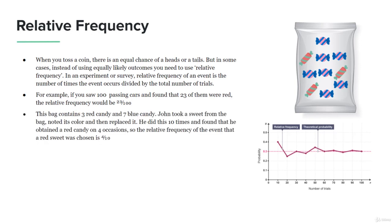This bag of candy contains 3 red candies and 7 blue candies. You can see that from the bag on the right. John takes a sweet from the bag, notes its color, then replaces it. He does this 10 times and finds that he obtained a red candy on 4 occasions. So the relative frequency of the event is that the red sweet was chosen 4 times out of 10.